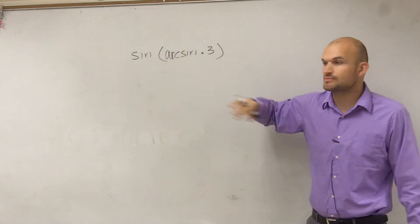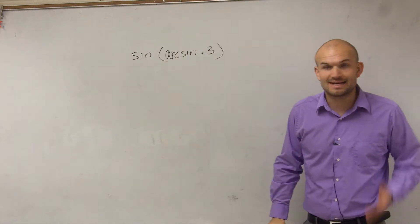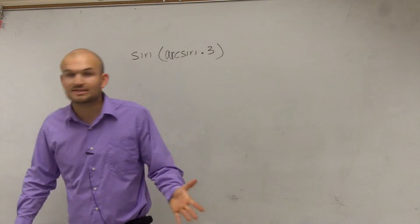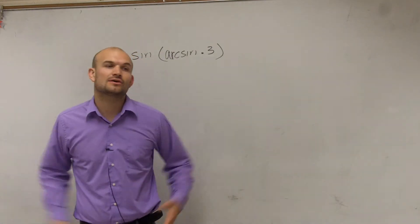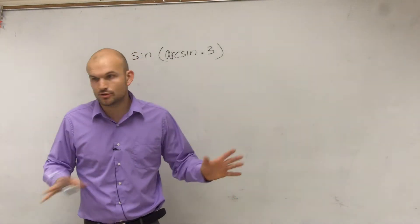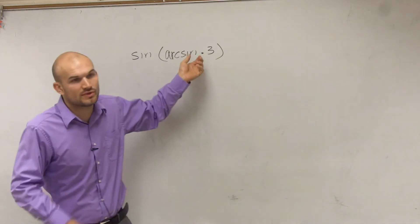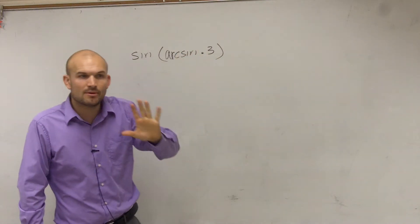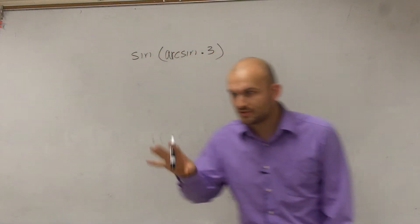So now what we're going to do is take the inverse sine of sine, and then take the sine of the function. Now, I don't have a calculator to solve this problem. You could easily do that though - take the inverse sine of 0.3 and then take the sine. But remember, to do that, there's a couple things we need to understand.